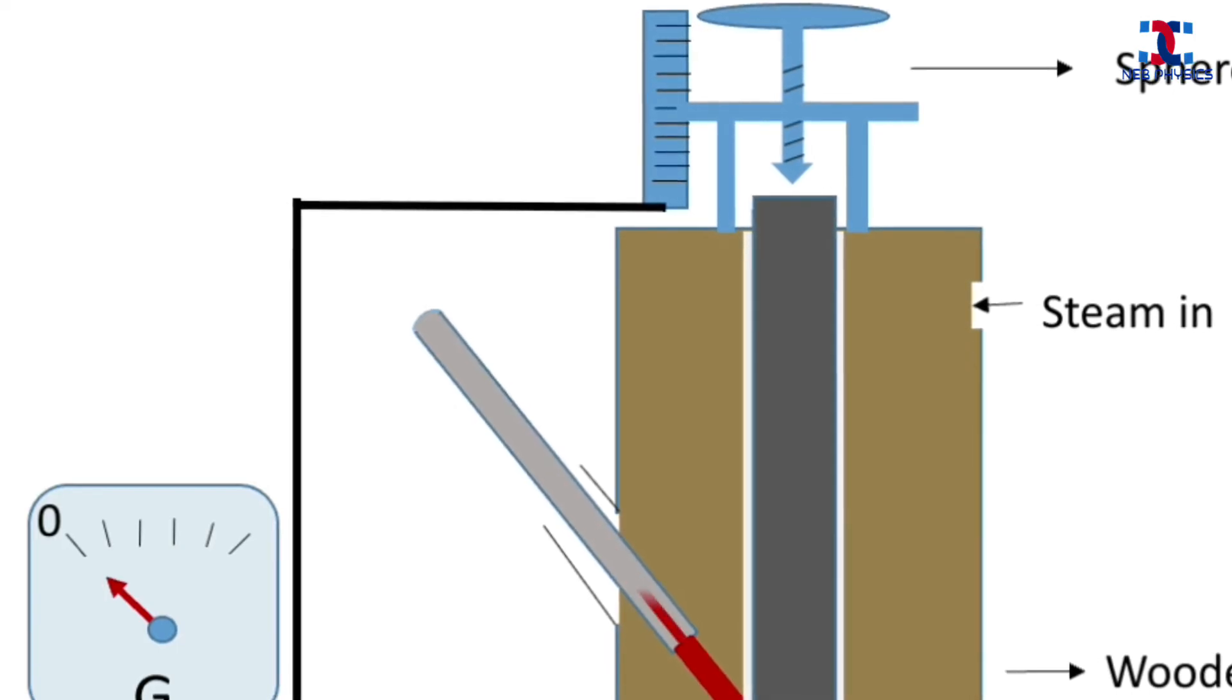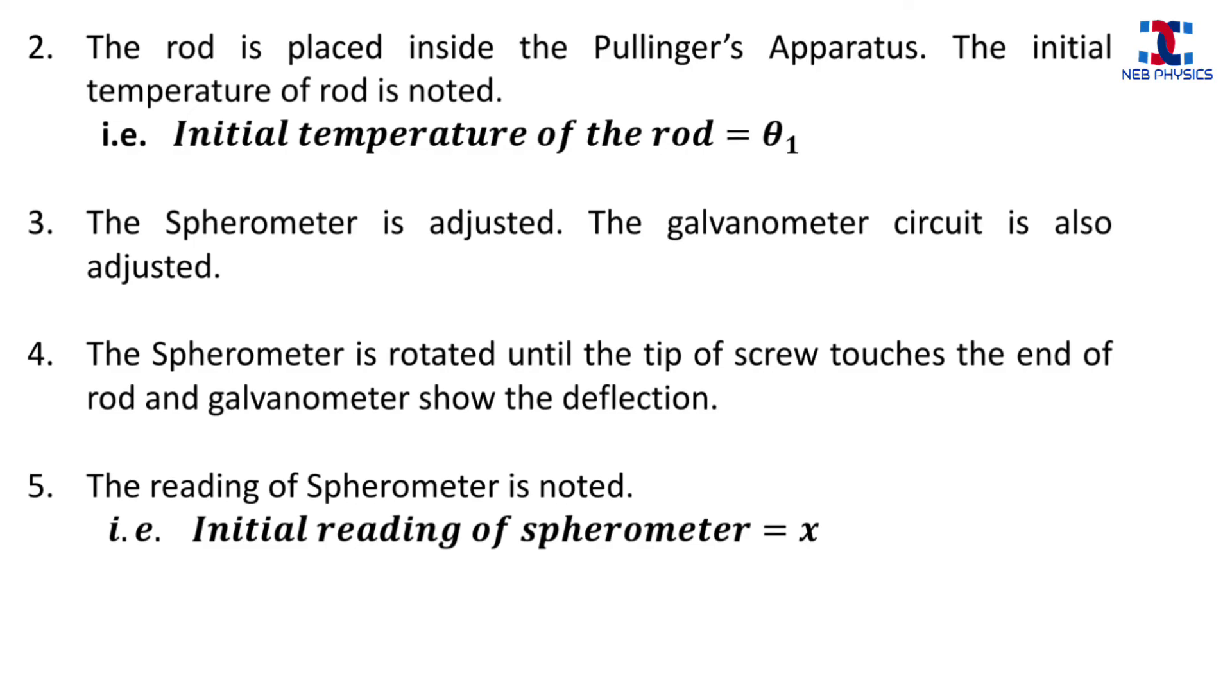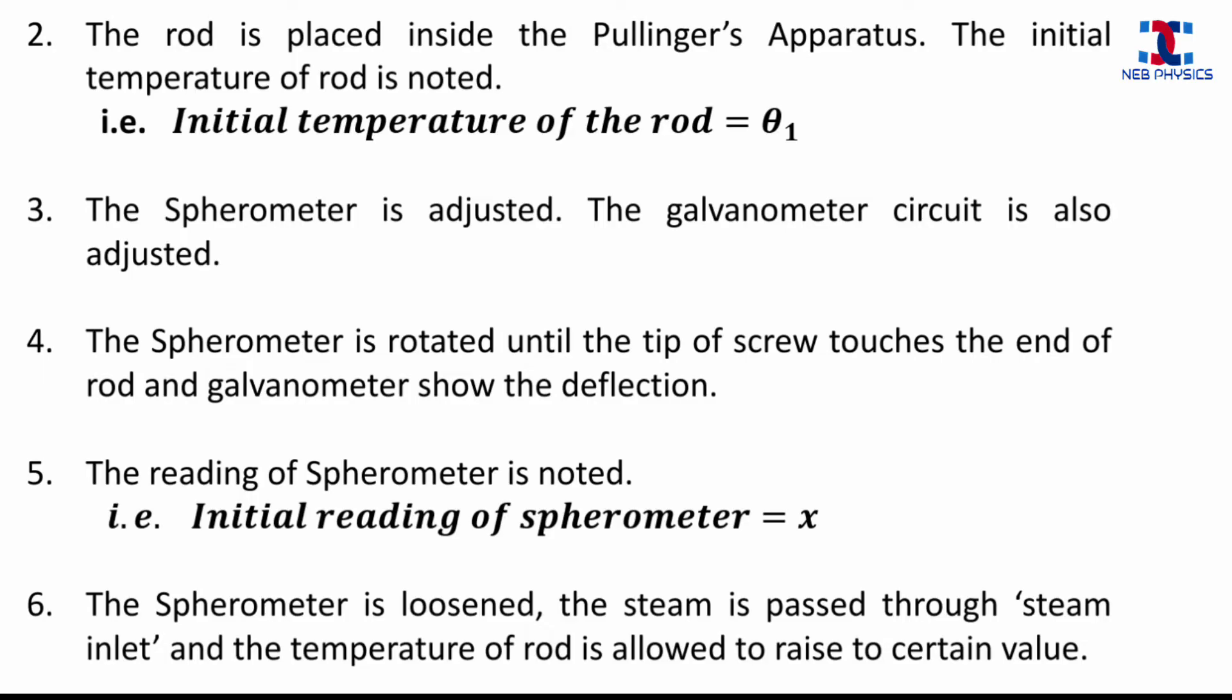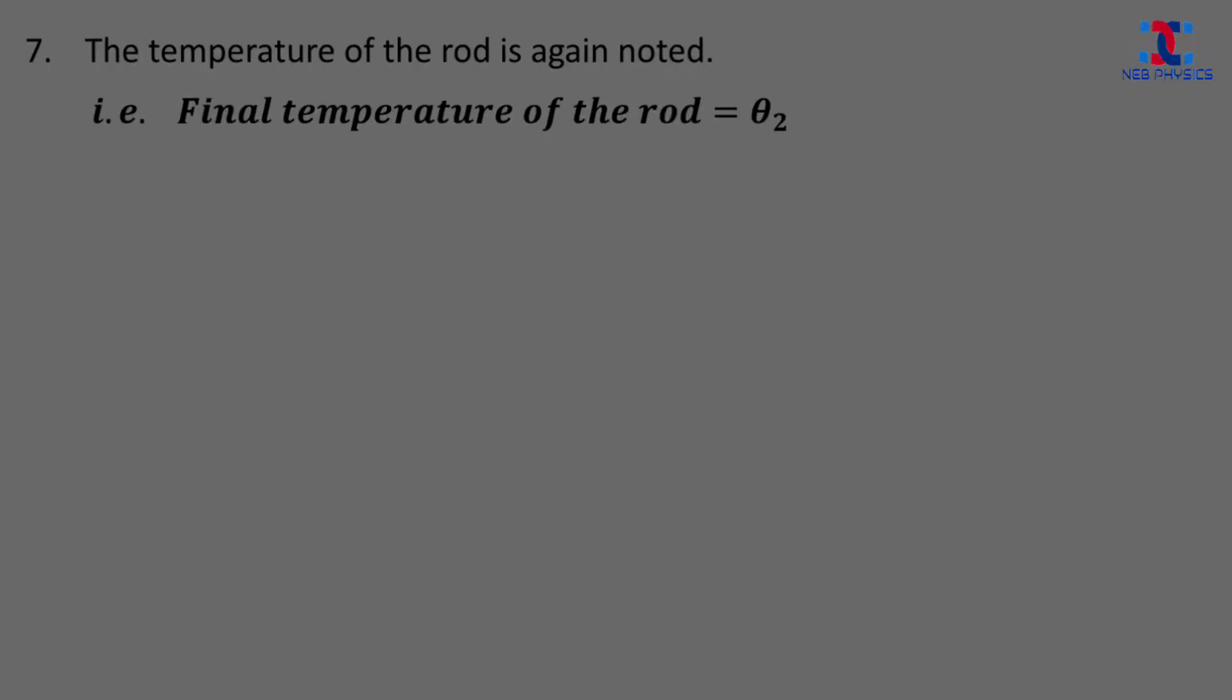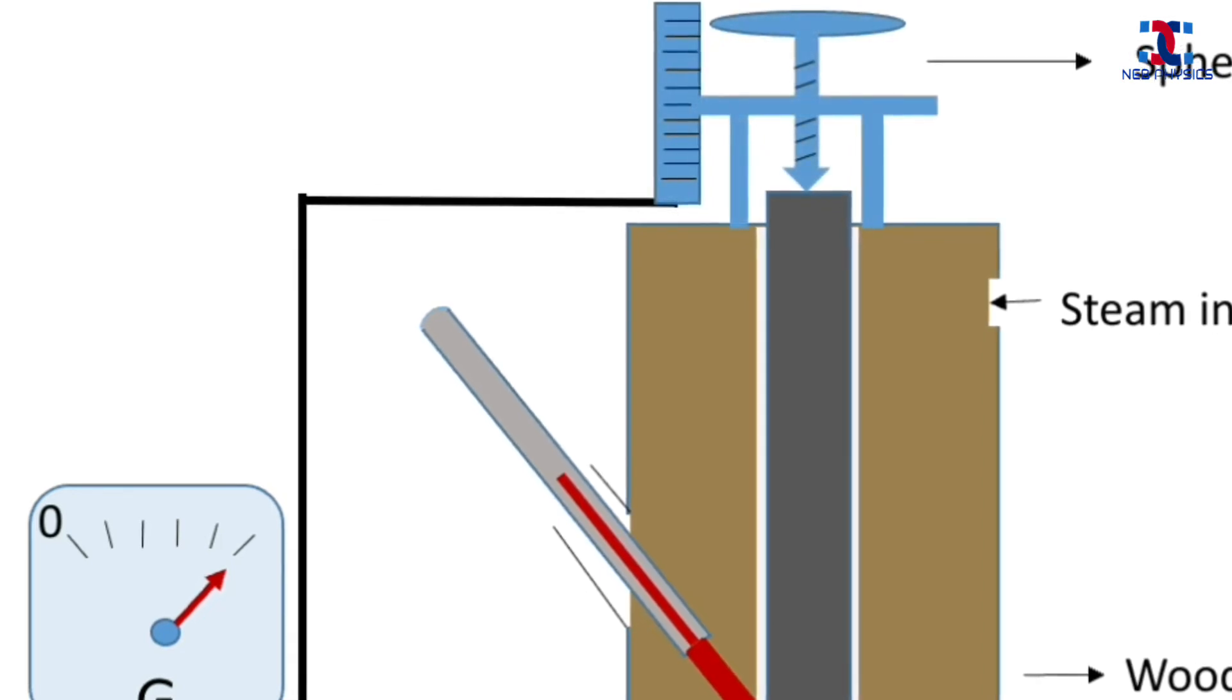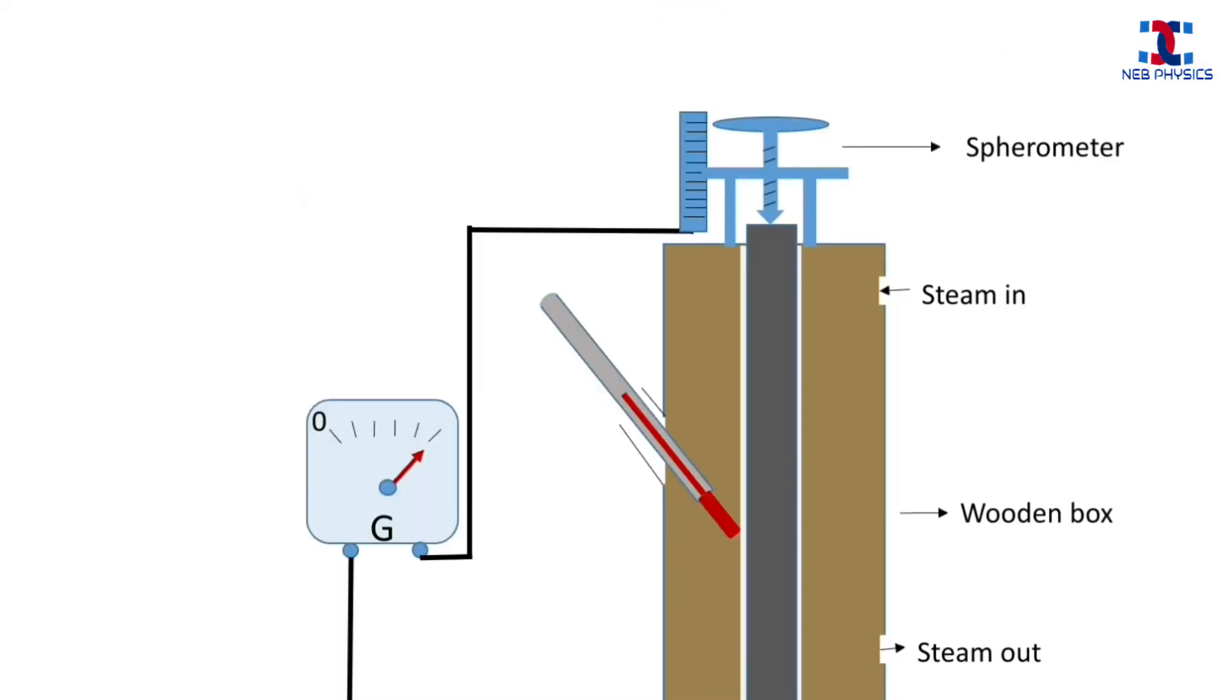After the steam is passed for some time and the metal rod is allowed to expand, the final temperature of the metal rod is noted. Now the spherometer is again rotated until the screw comes in contact with the upper end of the metal rod and the galvanometer shows the deflection. The reading of the spherometer at this point is again noted, which is called the final reading of the spherometer.